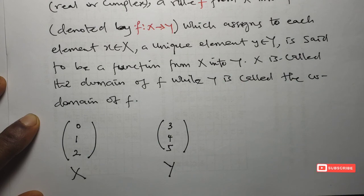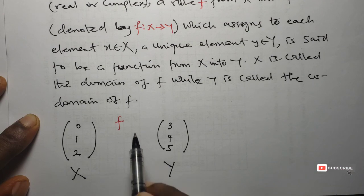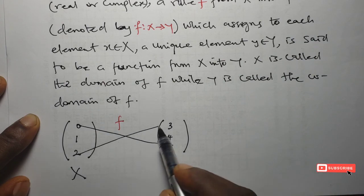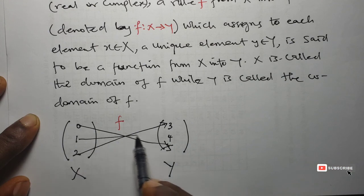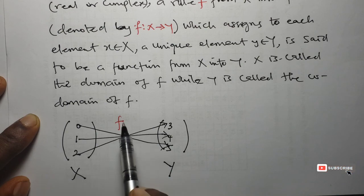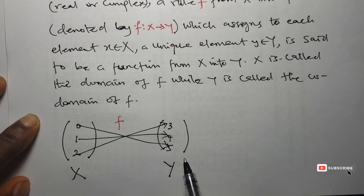Now if there is a rule, which we shall call f, that assigns elements from set x to set y, then such a rule will be called a function. So we are saying that if there is a rule that assigns 0 to 5, assigns 2 to 3, and maybe assigns 1 to 4, such a rule we shall call a function. The set x with elements 0, 1, and 2 is what we refer to as the domain of function f, and the elements 3, 4, and 5 from set y is what we refer to as the co-domain of the function.